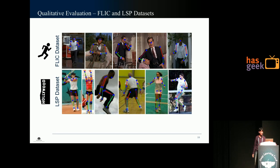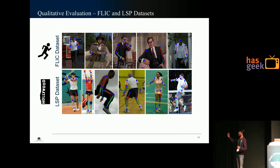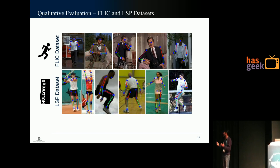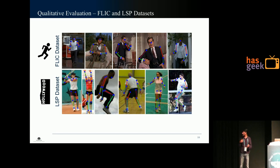Here are some qualitative results. The top dataset is the Hollywood dataset, which comes from movies and is less challenging than the LSP dataset, which is a sports dataset where people are doing acrobatics and more difficult poses to detect.